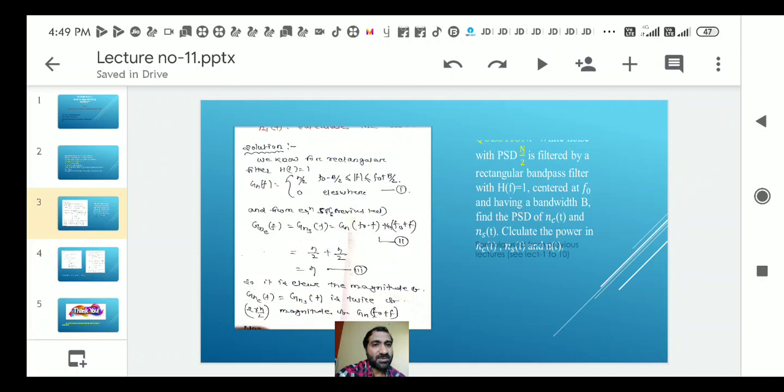From the previous equation, the power for nc and ns equals gn(f naught minus f) plus gn(f naught plus f). The value of gn(f naught minus f) deduced in last lecture is eta by 2, so eta by 2 plus eta by 2 equals eta. This equation 3 is very important.